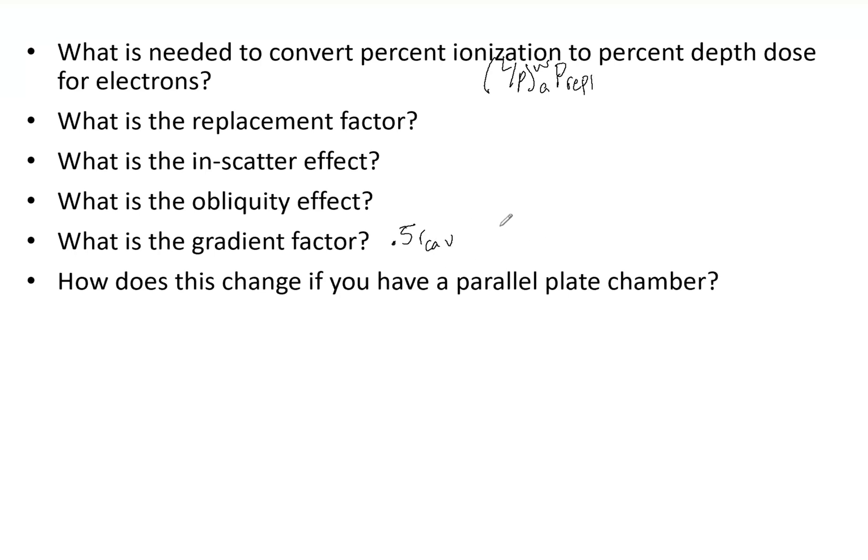Remember that is 0.5 times r_cav for electrons, and this is dependent on the cavity radius and the mean energy. It's very important to know these factors, be able to rattle them off and say how do you measure them, where do you get the numbers, what chamber do you use. This is a TG-51 question that's very important.